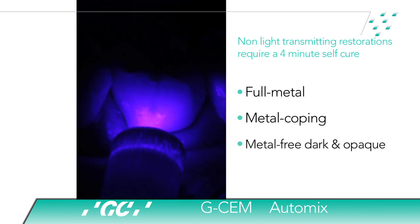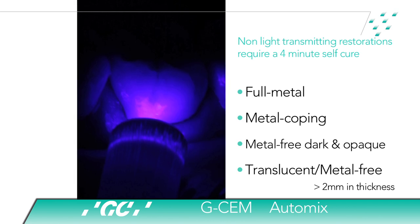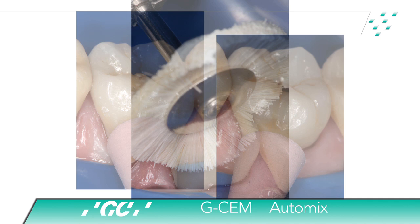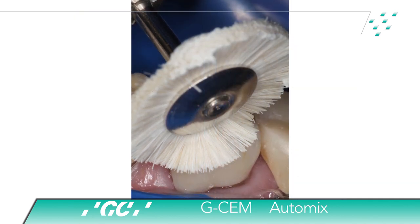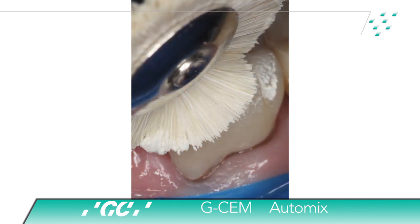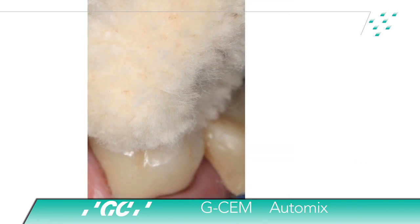After excess cement is removed, each surface is light cured for 10 seconds. For cementation of non-light-transmitting restorations — such as full metal, metal coping restorations, metal-free dark and opaque restorations, or translucent metal-free restorations greater than 2 mm in thickness — allow the cement to self-cure for 4 minutes after seating of the restoration. The restorative margin is polished using a silicone polishing cup by Brasseler. A properly polished ceramic surface allows optimal biointegration with soft tissue and surrounding dentition. The ceramic surface was polished to a high surface reflectivity using a synthetic diamond paste on a goat hair wheel, and a final polish was achieved with a dry cotton buff using an intermittent staccato motion at conventional speed.